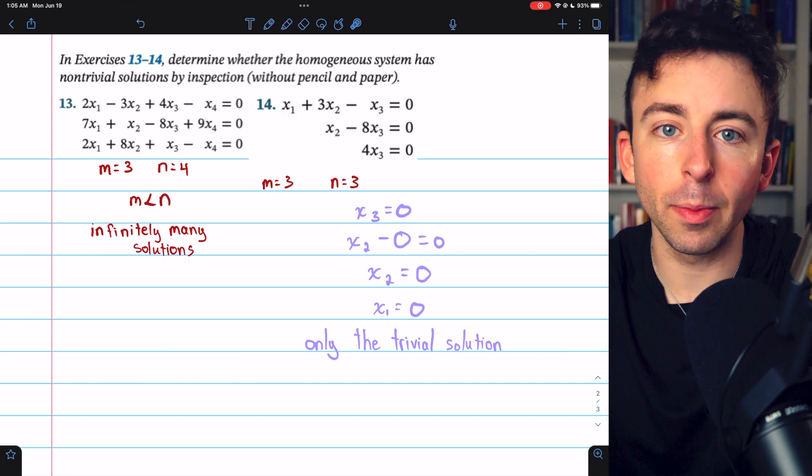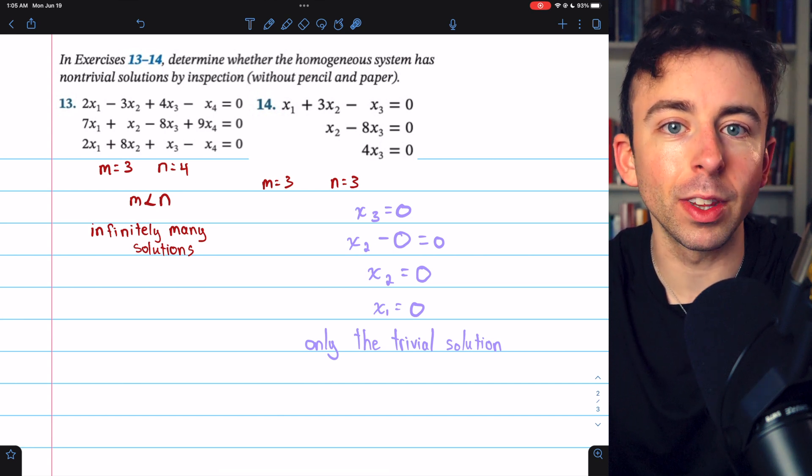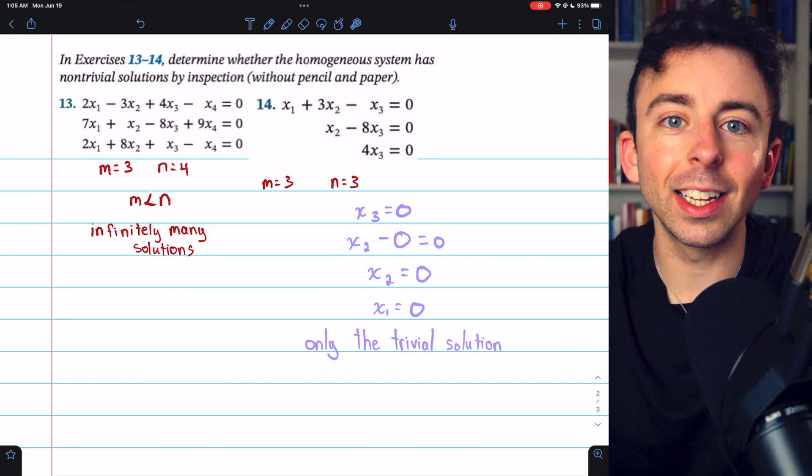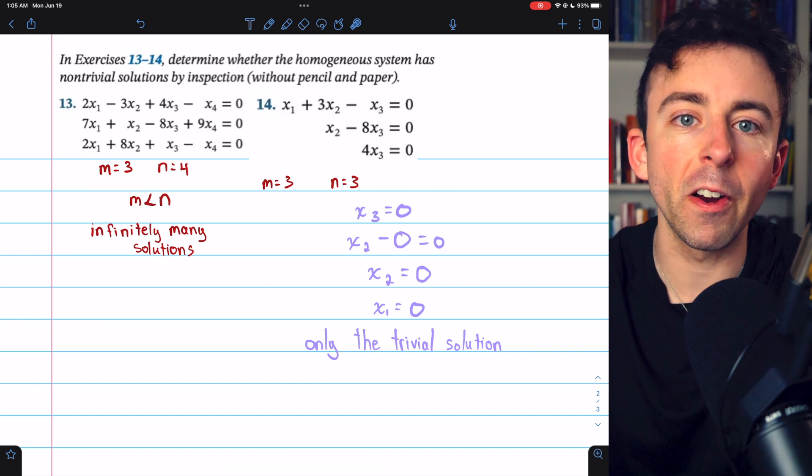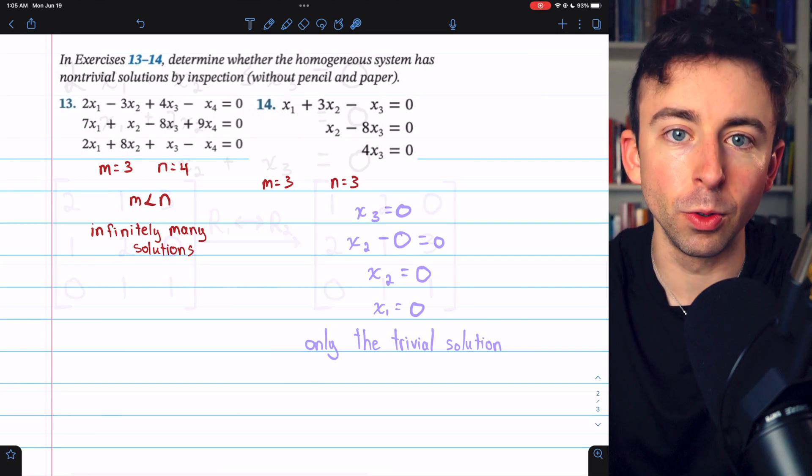And since the system in exercise 13 has infinitely many solutions, if you were to perform Gauss-Jordan elimination on the augmented matrix for the system, you would end up finding that you have at least one free variable, which indicates there are infinitely many solutions.